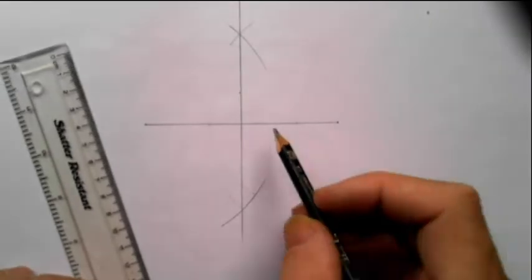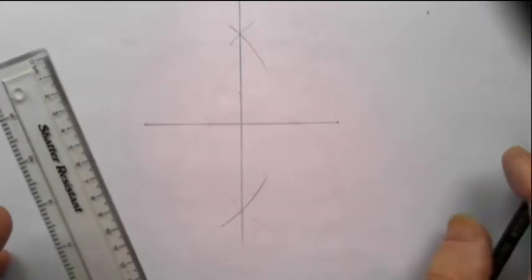So there we are and we've bisected it at 90 degrees. That's how to produce a 90 degree angle.